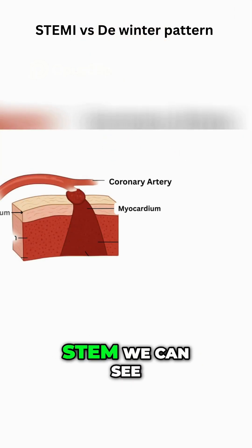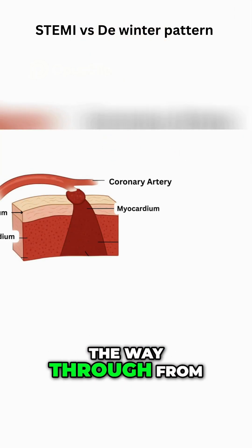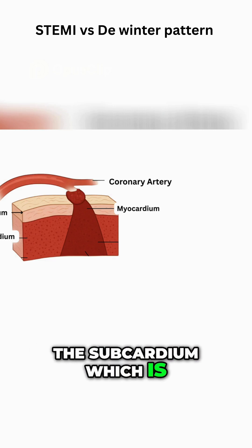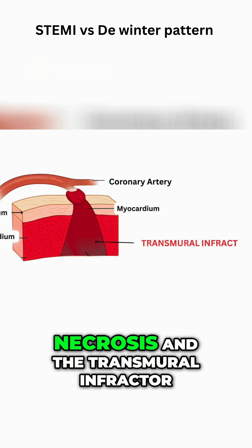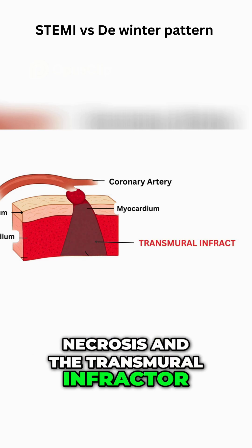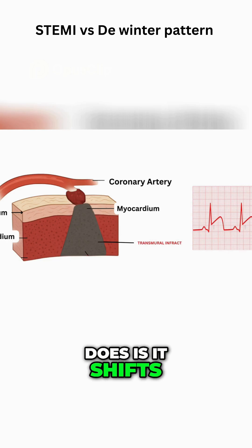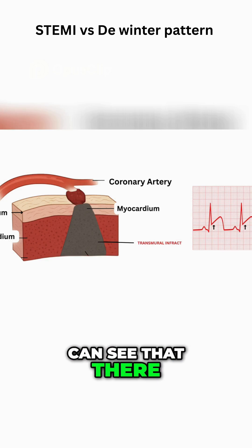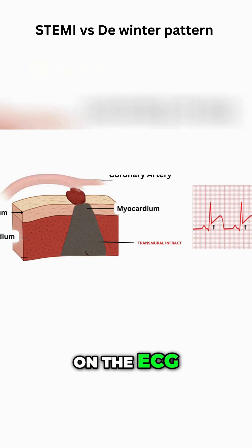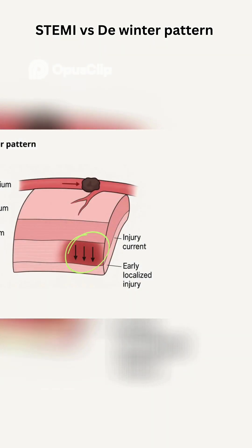According to our current understanding, in STEMI the damage goes all the way through from the subendocardium, which is the inner layer of the heart, to the epicardium. That's why we get necrosis and a transmural infarct develops. This transmural infarct shifts the injury current upward, which is why we see ST segment elevation on the ECG.